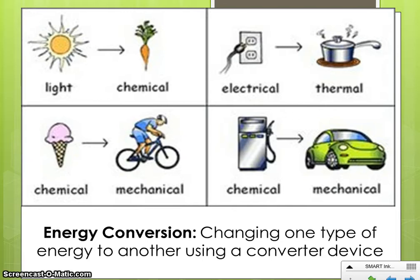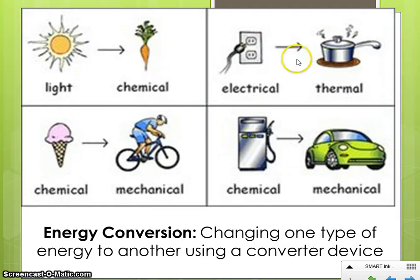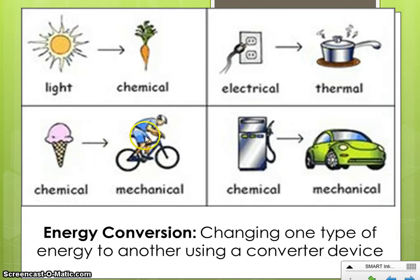Energy conversion is only done using a converter device. In the carrot example, the converter was the carrot. In the stove example, the converter device that changed electrical energy to thermal energy was the stove. In the ice cream example, the object that changed chemical energy to mechanical energy was your body. And in the car example, the car is the converter device — it changes chemical energy to mechanical energy.